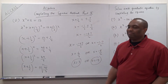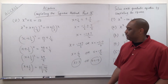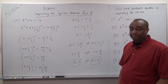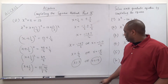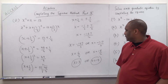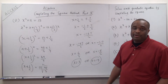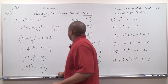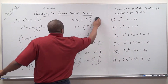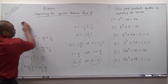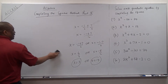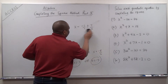And if you check it: 3 squared is 9, and 9 plus 3 is 12. Negative 4 squared is 16, and 16 minus 4 is 12. Alright, number 3 — let's solve this fast and get it done.